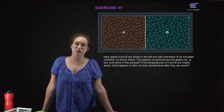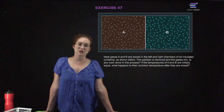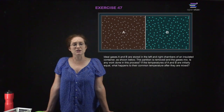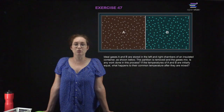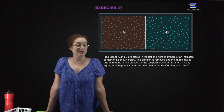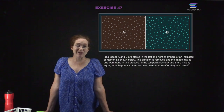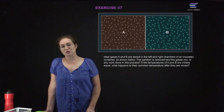Ideal gases are stored in an insulated container. The partition is removed and the gases mix. Is any work done? No — there is no net change in volume, so there is no work done. If the initial temperatures of A and B are equal, what happens to their common temperature after mixing? Their common temperature is still the same, because temperature is a measure of the average speed of the gas molecules.